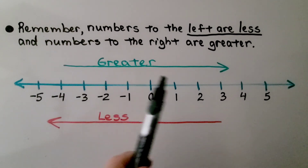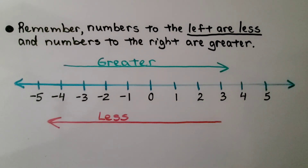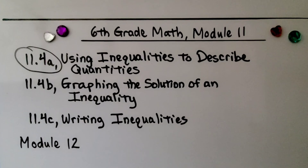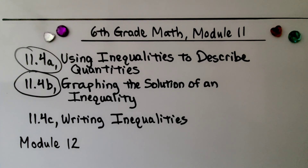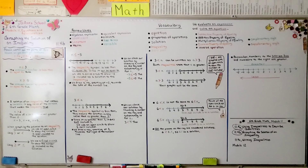Now that we've finished this lesson, we're moving on to the next lesson, 11.4c, where we're going to be writing inequalities. Remember when graphing that the open circle means no — it's not included, like the 'o' in no. I hope you have a wonderful day and I hope you'll join me for the last part of this lesson.